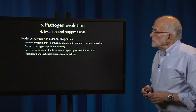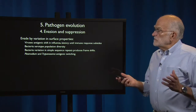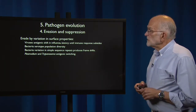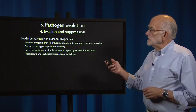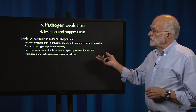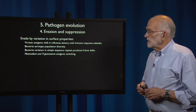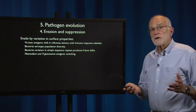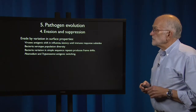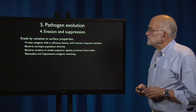In this lecture we're going to look at how pathogens can evade by varying their surface properties. This is done by viruses, bacteria, and by eukaryotes like Plasmodium and trypanosomes.